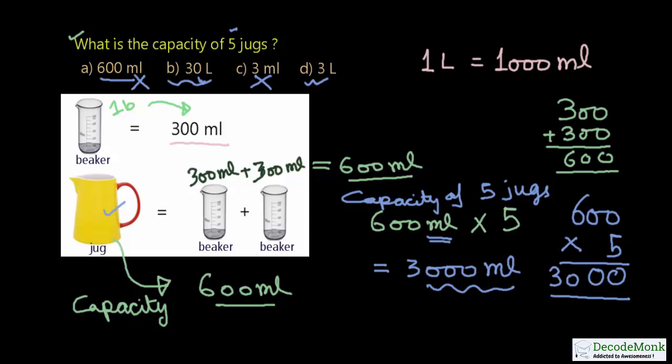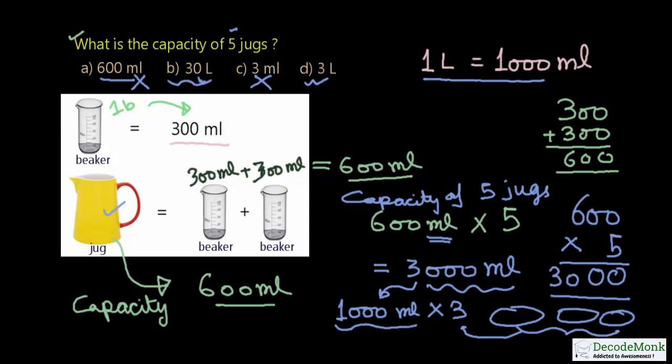You know that 1 liter is 1000 milliliters. So 3000 milliliters equals 3 times 1000 milliliters. Since 1000 milliliters is 1 liter, 3 times 1000 milliliters equals 3 times 1 liter, which equals 3 liters.